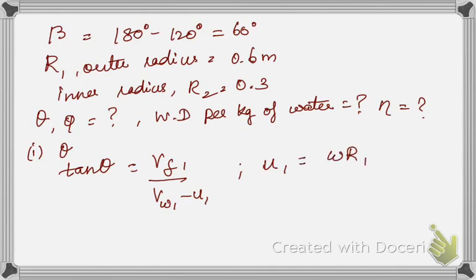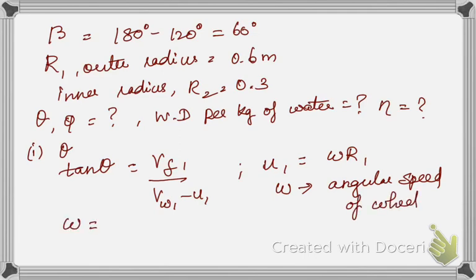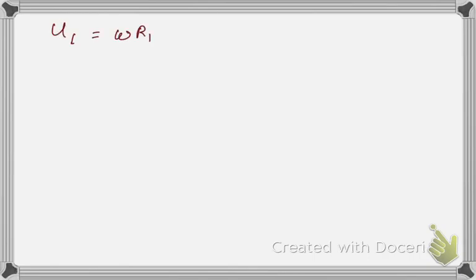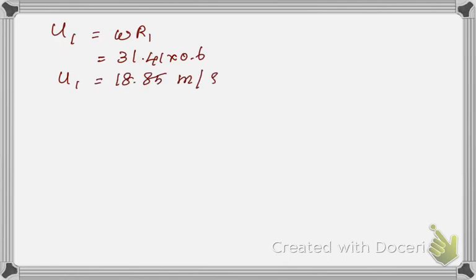The formula for u1 is omega × r1, where omega is the angular speed. Omega = 2πn/60 = 2π × 300 / 60 = 31.41 rad/s. Now we can get u1: u1 = omega × r1 = 31.41 × 0.6 = 18.85 m/s.